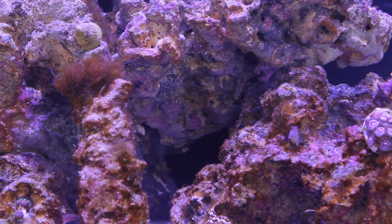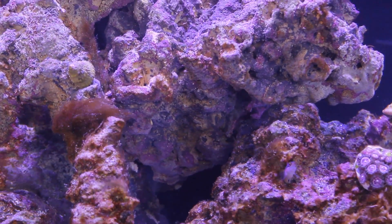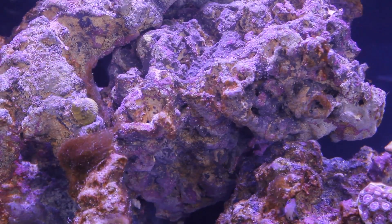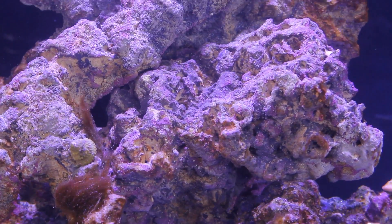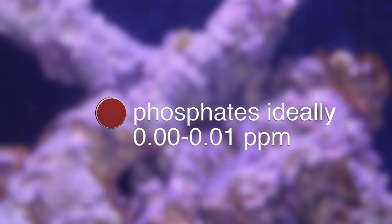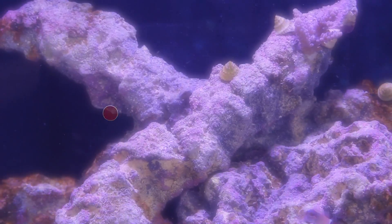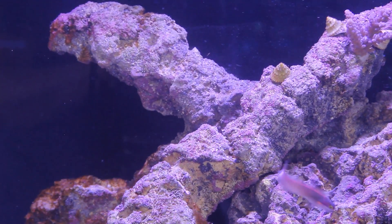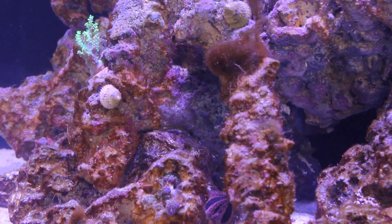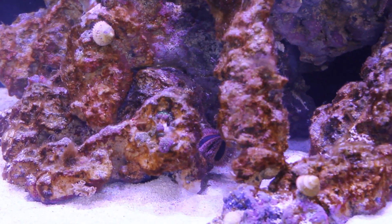Our phosphate test came out at 0.04 parts per million which is well within the desired range. Obviously lower is better. We'd prefer phosphates at 0.00 or 0.01 parts per million. To get them a little bit lower we can do a water change and adjust our dose of Red Sea's NO3PO4X. Now I'm just going to work through these test kits and show you how we came up with these results.